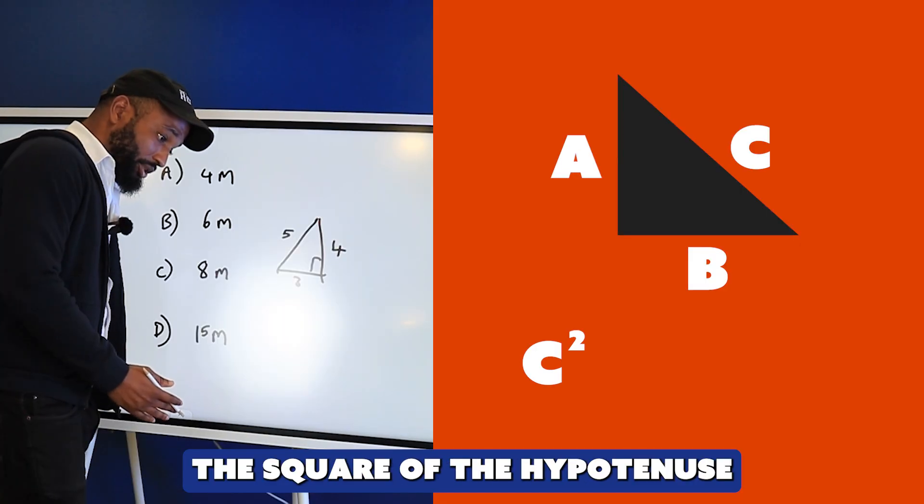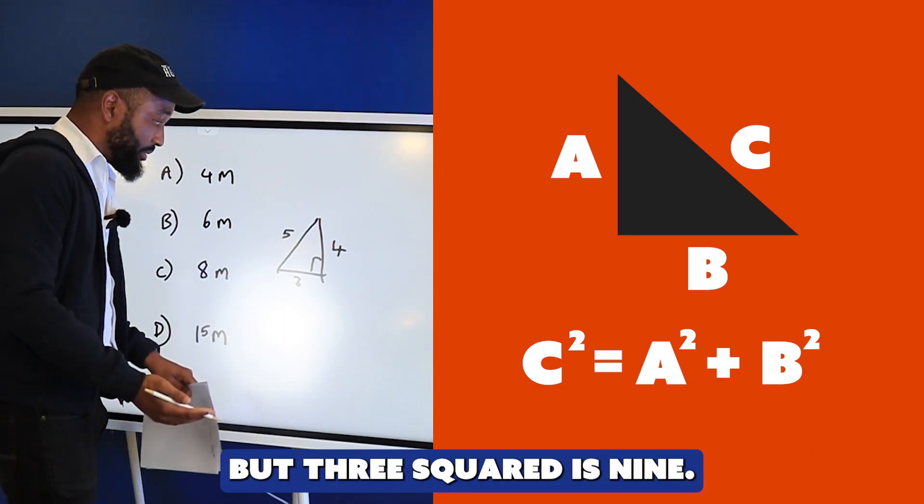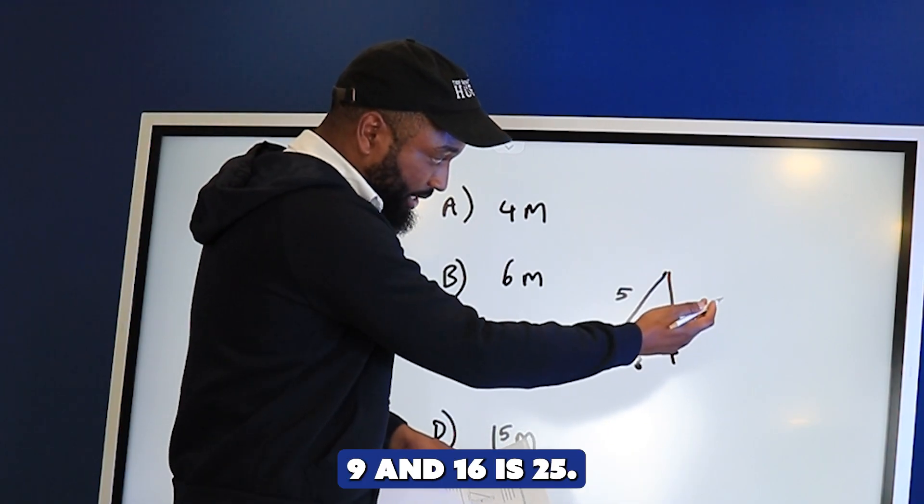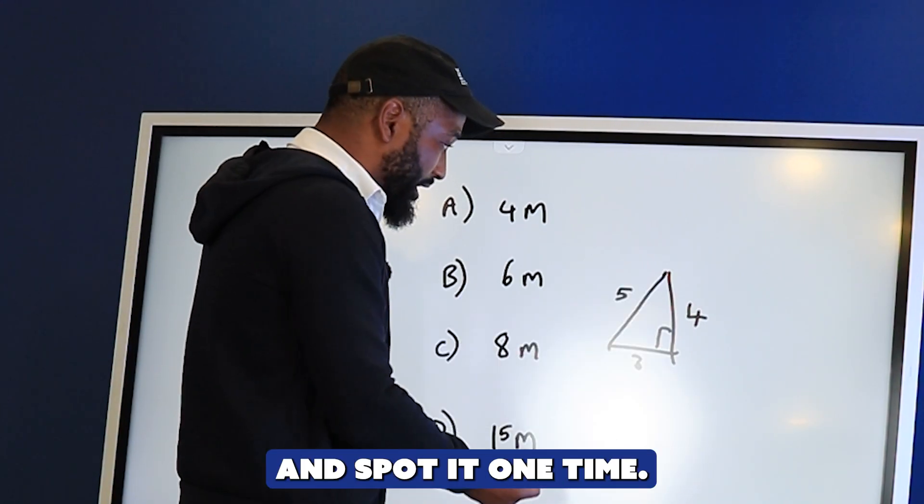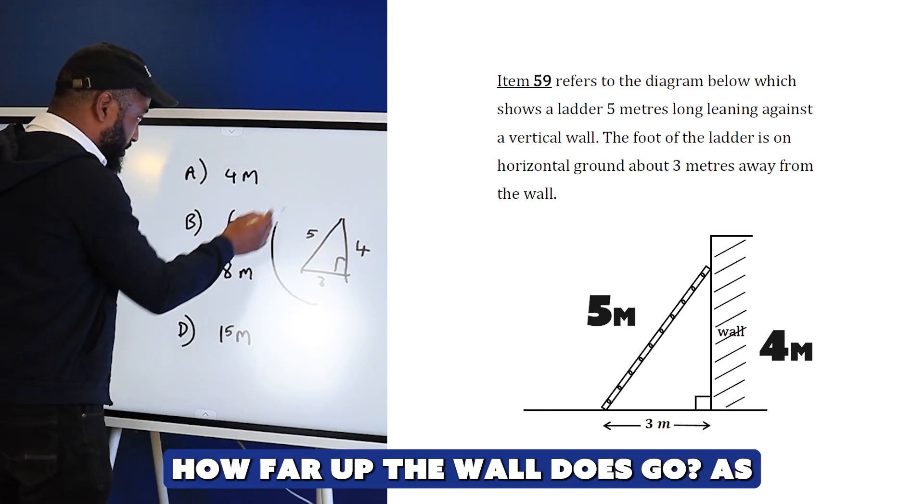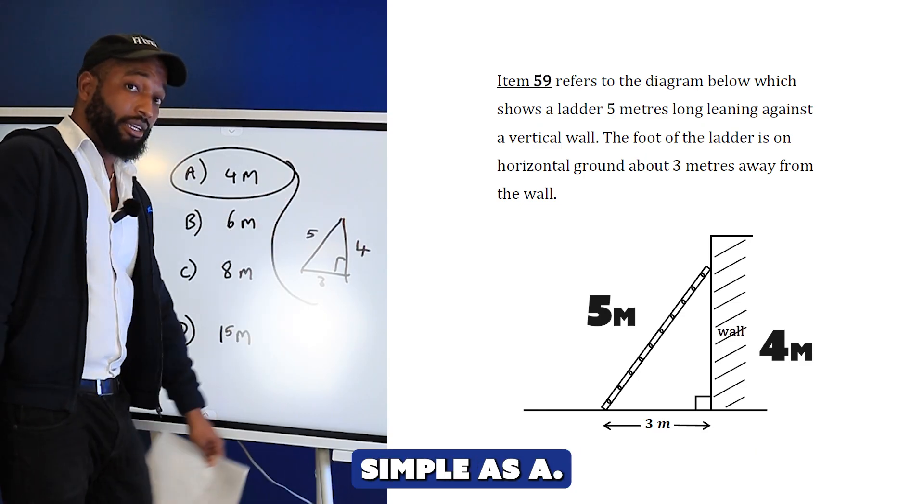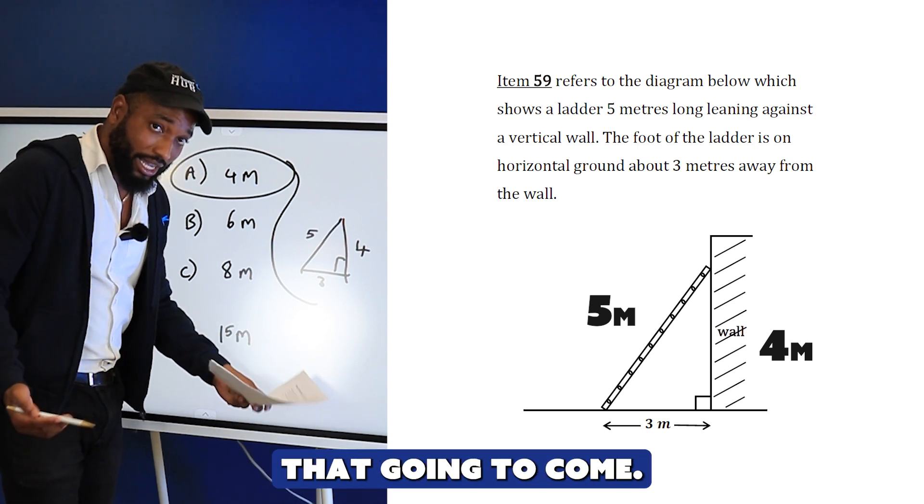You could use Pythagoras theorem - c² = a² + b². Three squared is 9, four squared is 16. 9 and 16 is 25, square root of 25 is 5. You're just supposed to know that 3-4-5 triangle and spot it one time. If you're not memorizing that 3-4-5 triangle, you're playing with a mark in your exam that's gonna come.